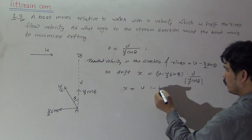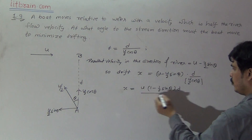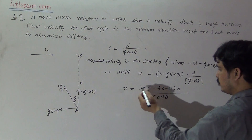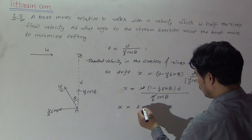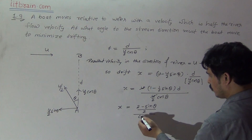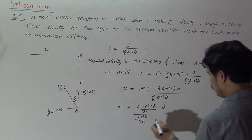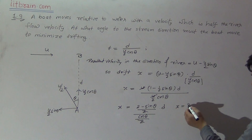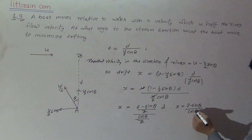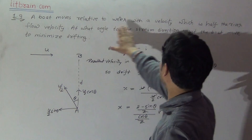Taking u as common: x = u(1 - sinθ/2) × d / (u/2 cosθ). Cancelling u and simplifying with LCM, the numerator becomes 2 minus sinθ over 2, and dividing by cosθ/2 into d. Cancelling the 2, we get x = (2 - sinθ) / cosθ × d. Now we need to minimize this drift.